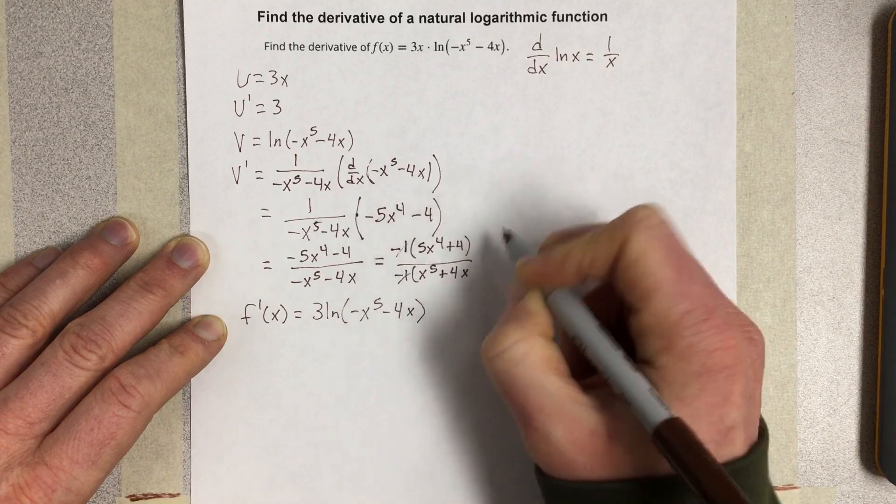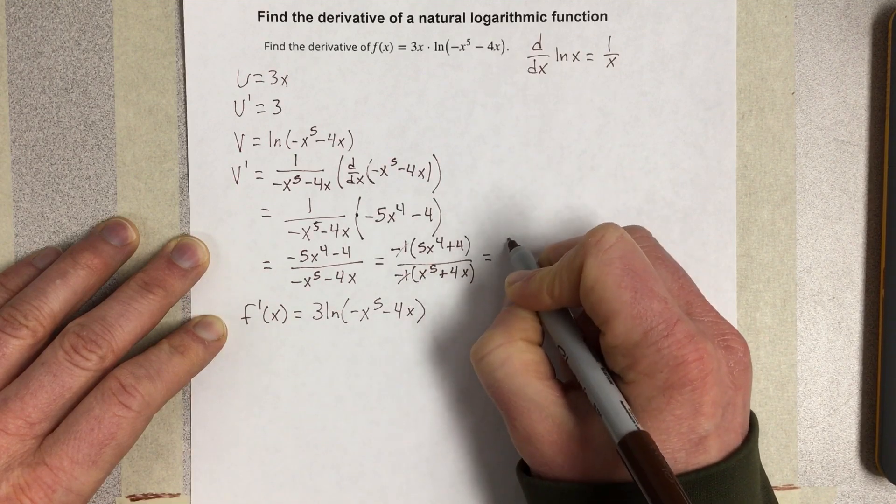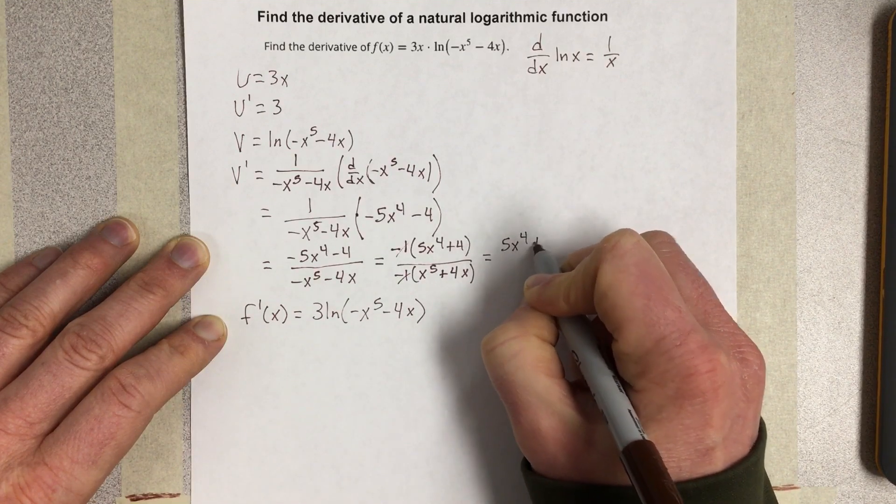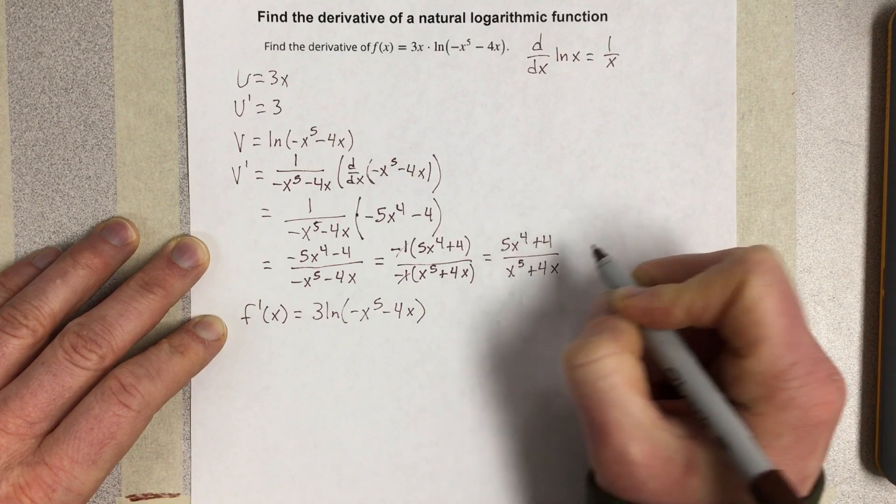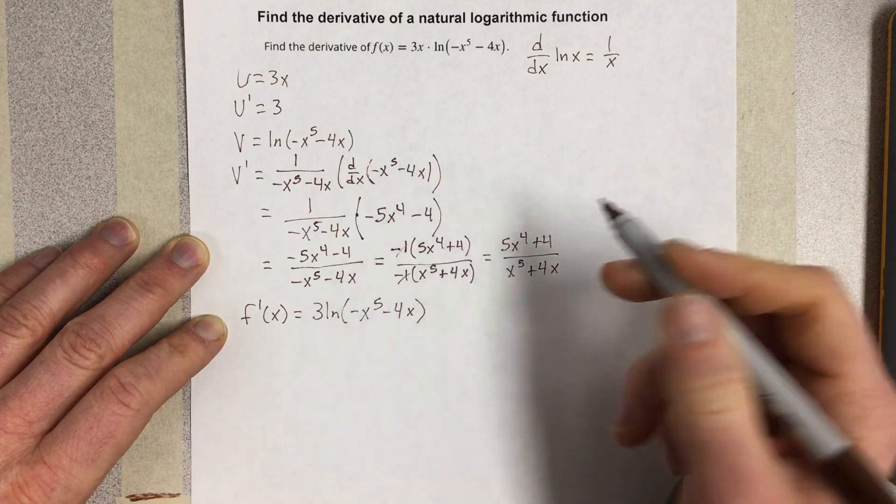If those negative 1s cancel, I'm left with just 5x to the 4th plus 4 over x to the 5th plus 4x. It looks a little better now. It's the same expression, just a little better.